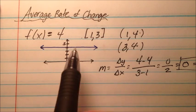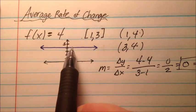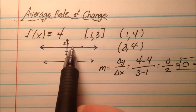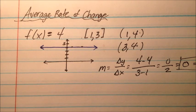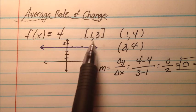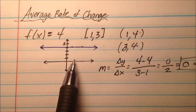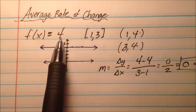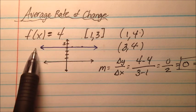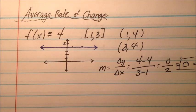So what this means is that from (1, 4) to (3, 4), the change is 0, because we're not going up or going down. For this constant function, we're not doing much of anything. This is probably the most basic average rate of change problem — y equals 4 has no change at all whatsoever.